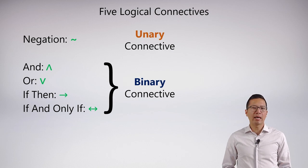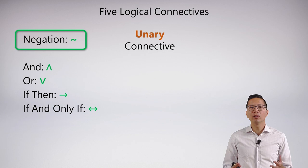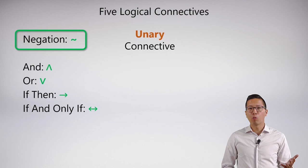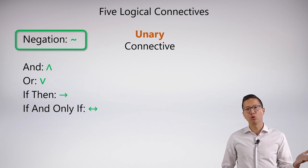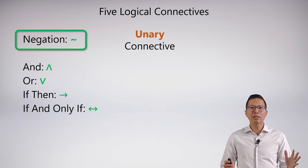We'll start with negation. Fortunately, negation is a really straightforward connective — there's nothing really to it. It's unary, so it just modifies a single statement. We remember how it works from Unit 2: it just changes the truth value from true to false and false to true. So there's not really too much to focus on.